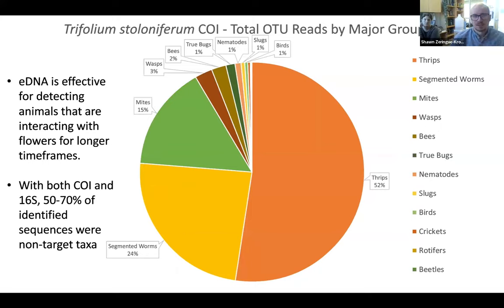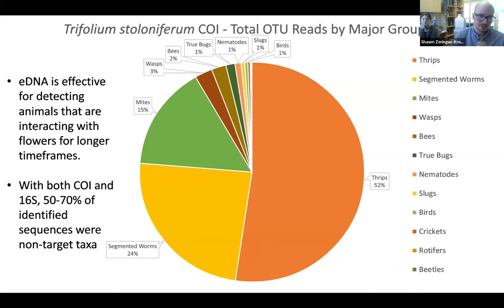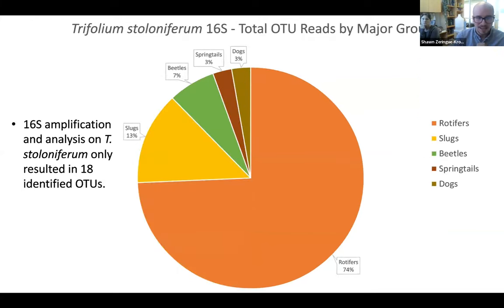Last year while in Kentucky, I was invited to collect a few flowers from Trifolium stoloniferum just to see if we could detect anything. We threw it on the same metabarcoding run as the Fisaria, and we saw a pretty similar pattern — mostly thrips, mites, and segmented worms, with wasps, bees, and true bugs coming up behind. For 16S on Trifolium, we only had 18 unique sequences make it through filtering and get identified, compared to at least a thousand sequences for the other three samples — so something was going on with that.